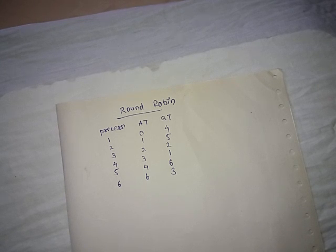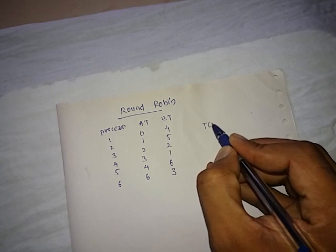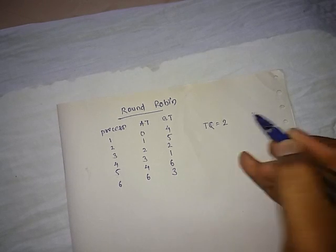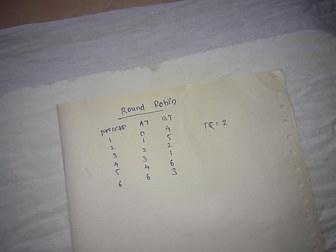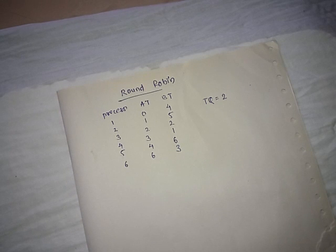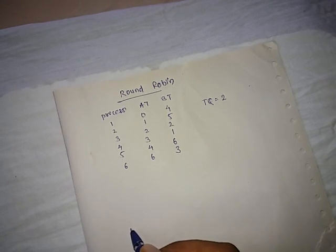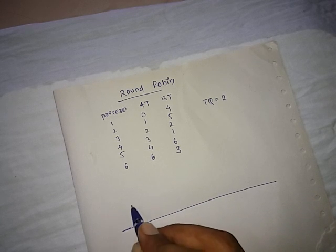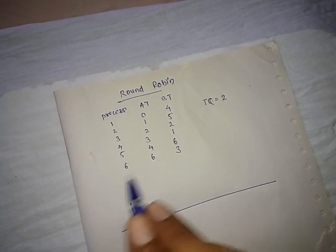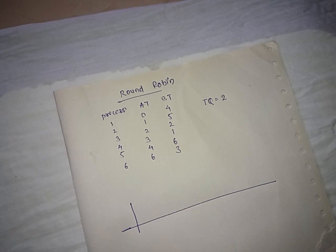There are processes given with arrival times and burst times for particular processes, and the time quantum is 2 for this Round Robin algorithm. The first step is to draw a Gantt chart. Round Robin is the extension of first come first serve in a round fashion and it is a preemptive first come first serve algorithm.